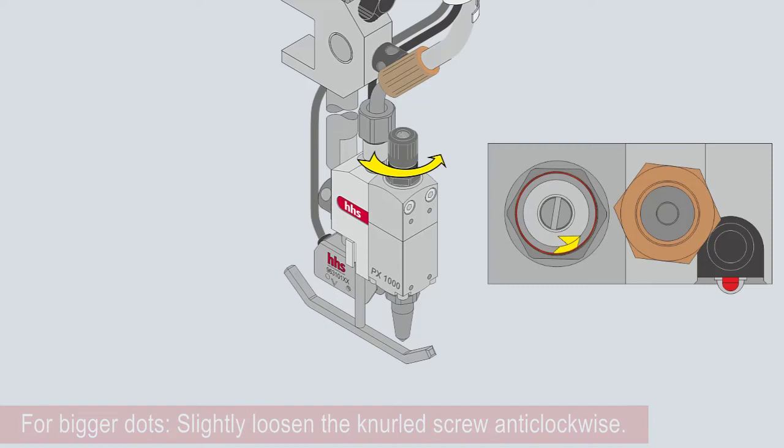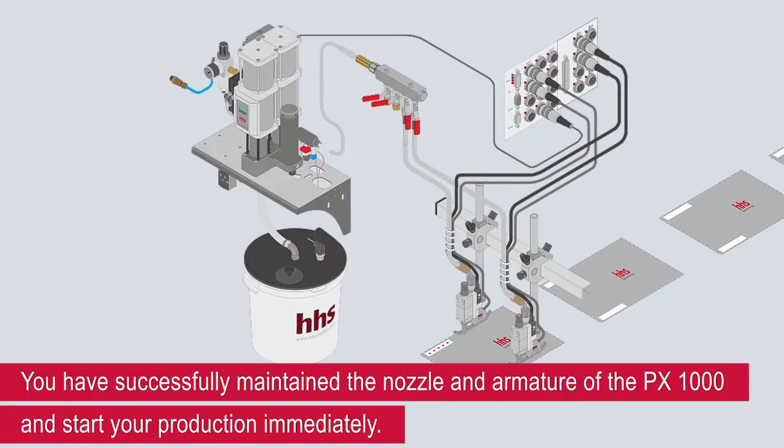You have successfully maintained the nozzle and armature of the PX1000 and can start your production immediately. Preventive maintenance increases the availability of your production machines and boosts your productivity. For more tutorials, check out our tutorials playlist on the Balma HHS YouTube channel. See you next time.